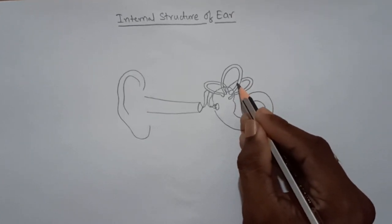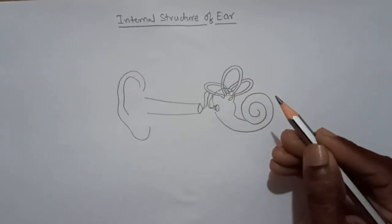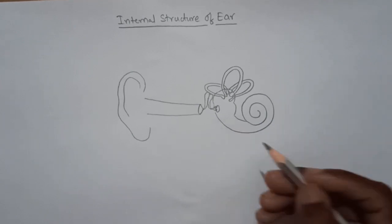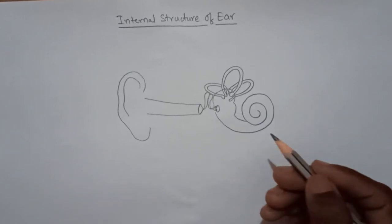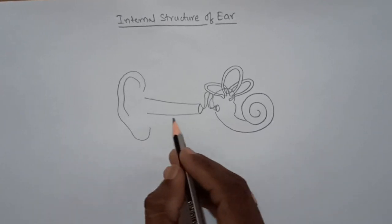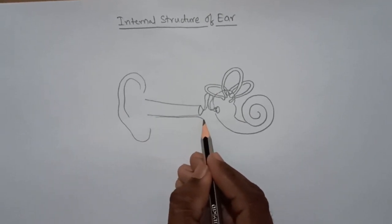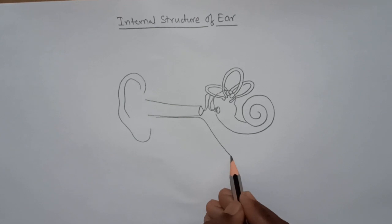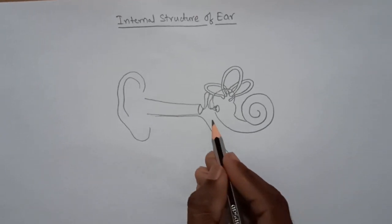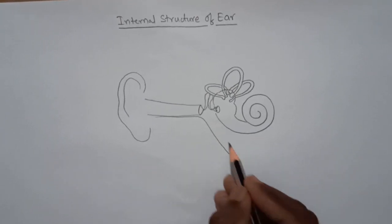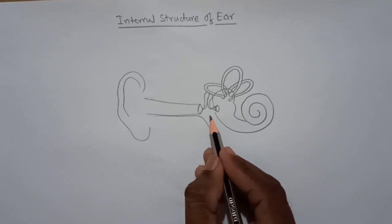Which is filled with perilymph. And from here we have to draw the eustachian tube, which enters into the mouth.